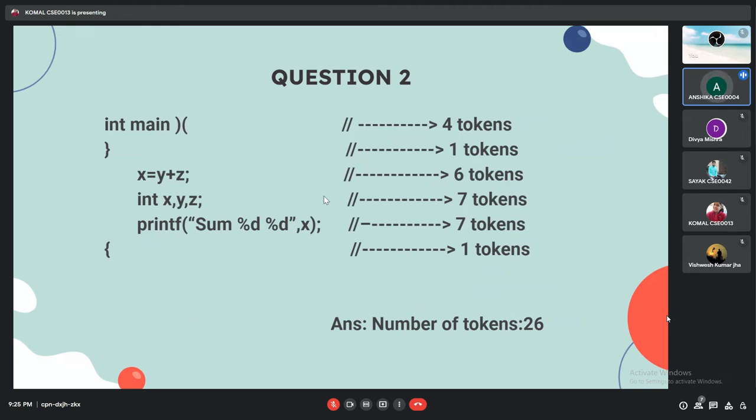Then coming to the third line. X equal to sign Y plus operator Z and a semicolon. So the total number of tokens in the third line is six. In the same way there are seven tokens in the next line. And in the printf sentence there are seven tokens. And at the end there is an open curly brace. So the total number of tokens in that line is one. Then so in all when we count all the number of tokens in each line the total that we get is 26. So first it generates the token and gives error messages if the code is correct or not.